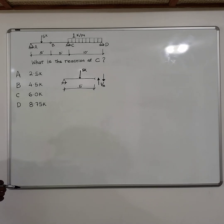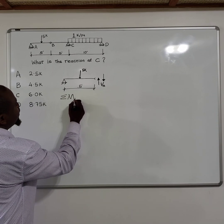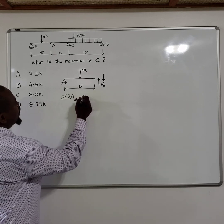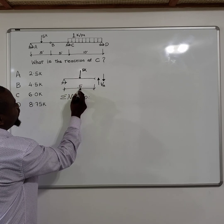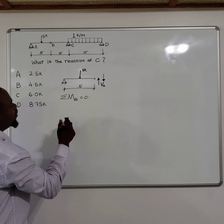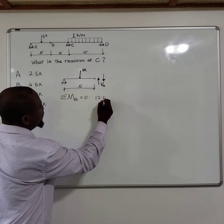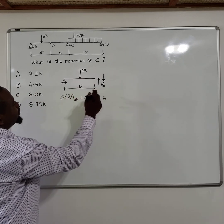We know that at hinge support there is no moment. Hinge supports do not have moment. So that means the moment at point B is zero. So you can simply say the sum of moment at B is equal to zero.